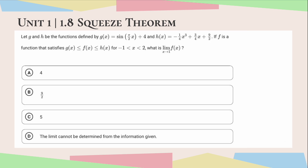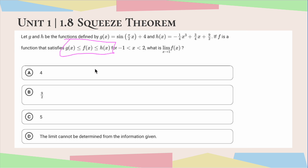This is the third common type of squeeze theorem problem you may see. It says: let g and h be the functions defined by g(x) = sin(π/2 · x) + 4, and h(x) = -1/4·x³ + 3/4·x + 9/2. If f is a function that satisfies g(x) ≤ f(x) ≤ h(x) for -1 < x < 2, what is the limit of f(x) as x approaches 1? I'm identifying this as a squeeze theorem problem because f is being squeezed in between two outer functions g and h.